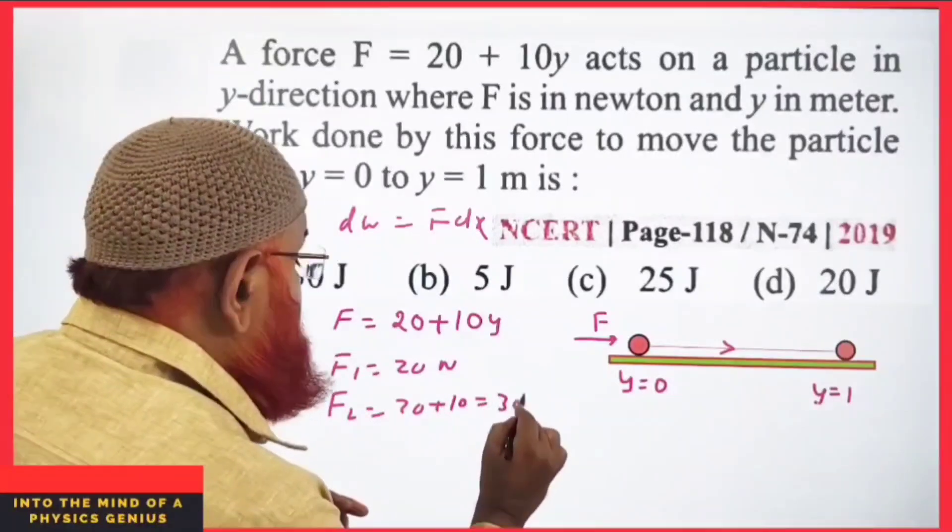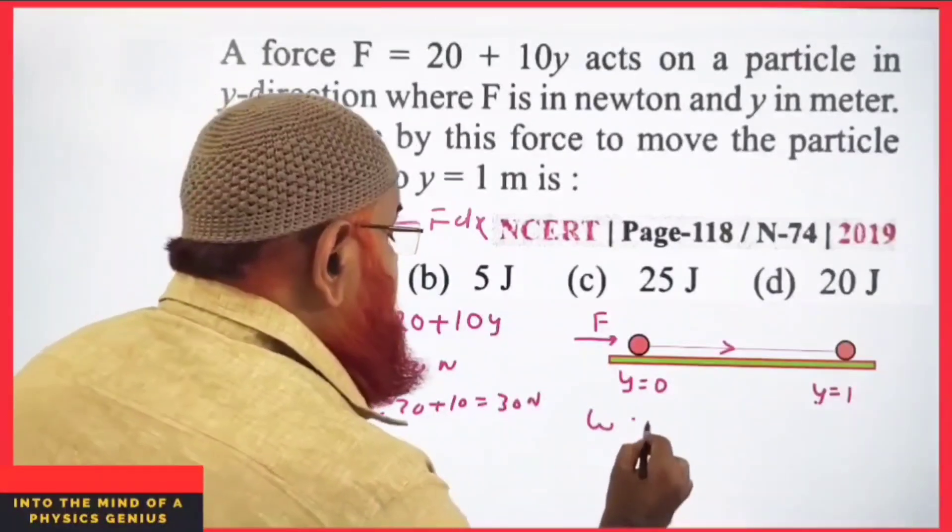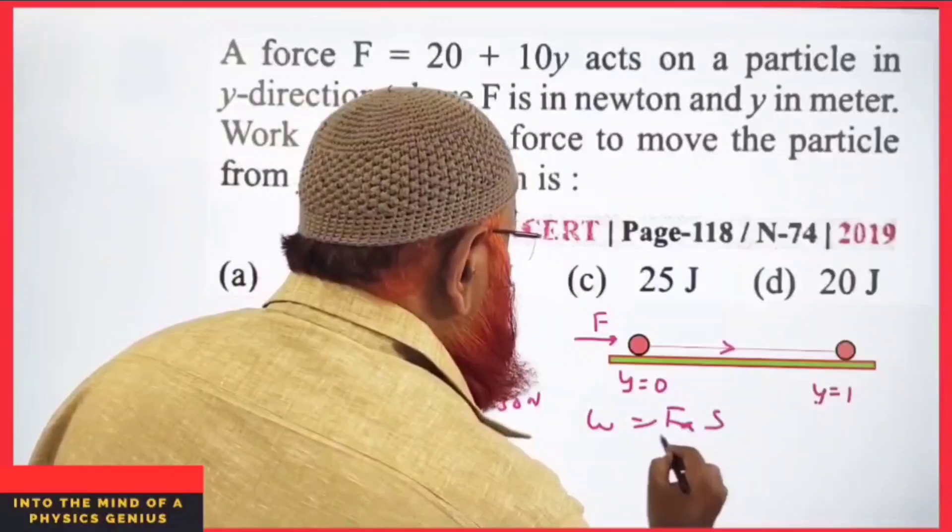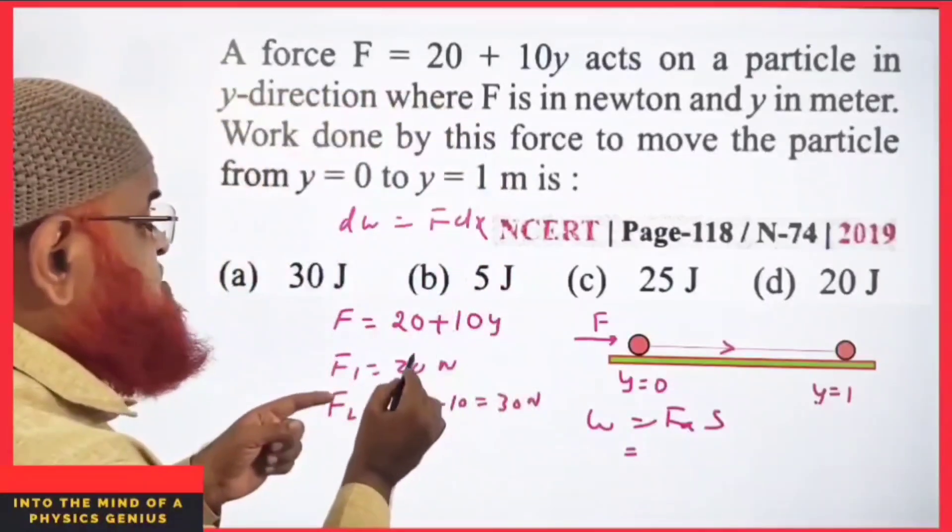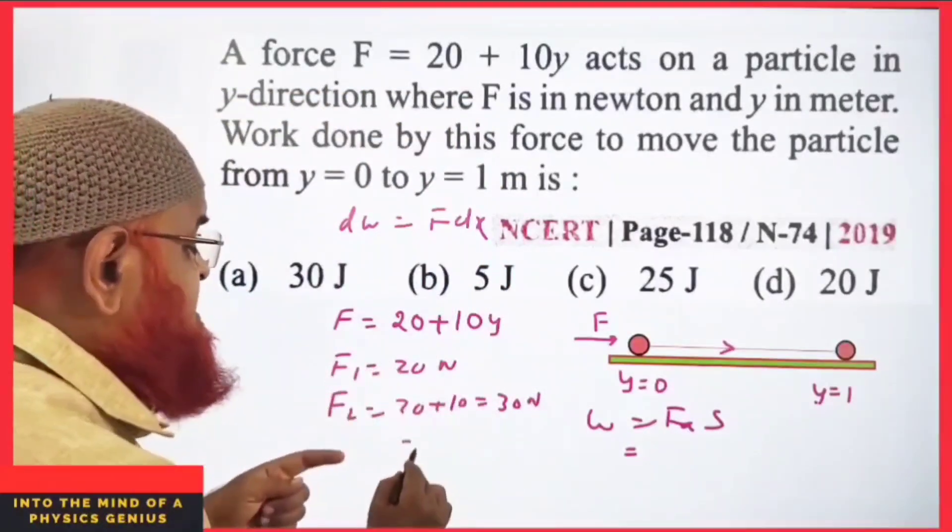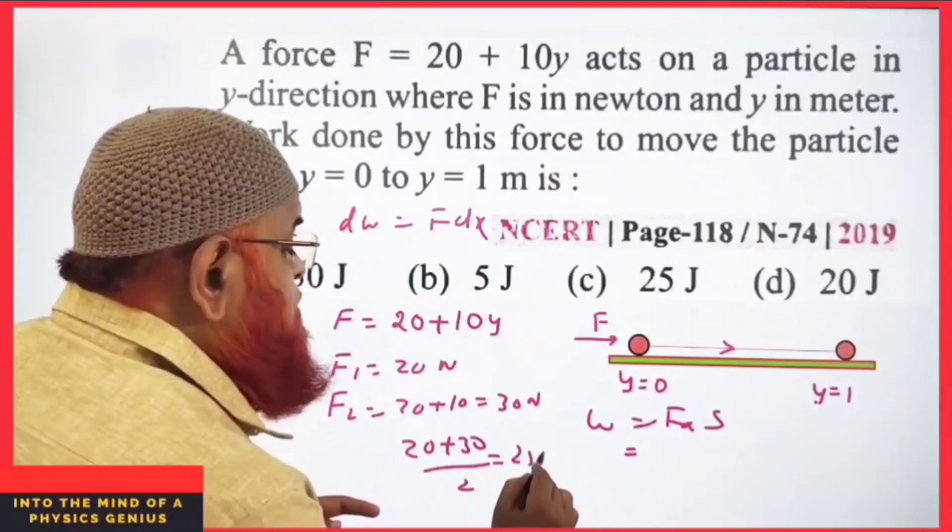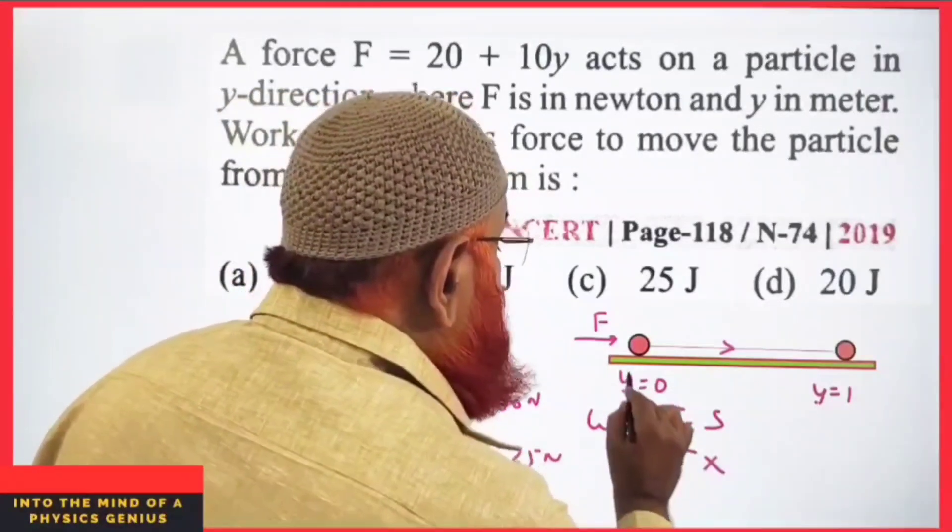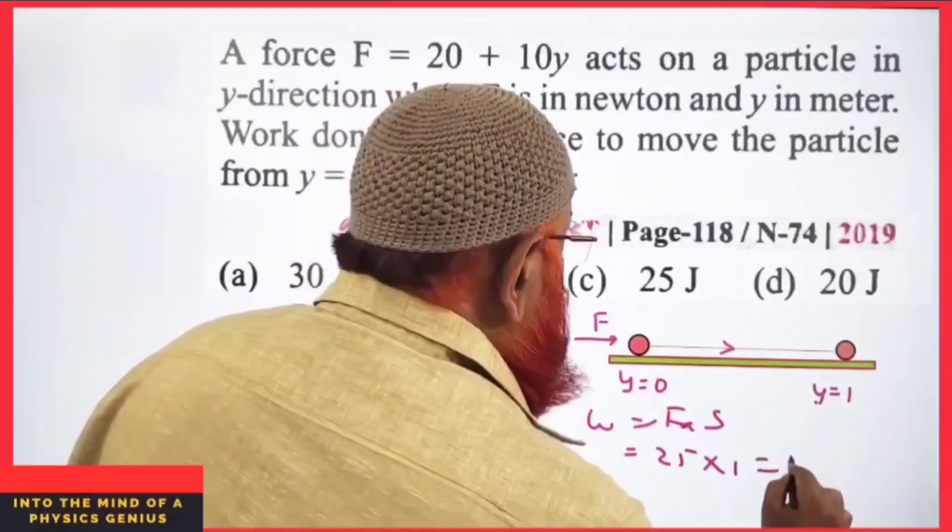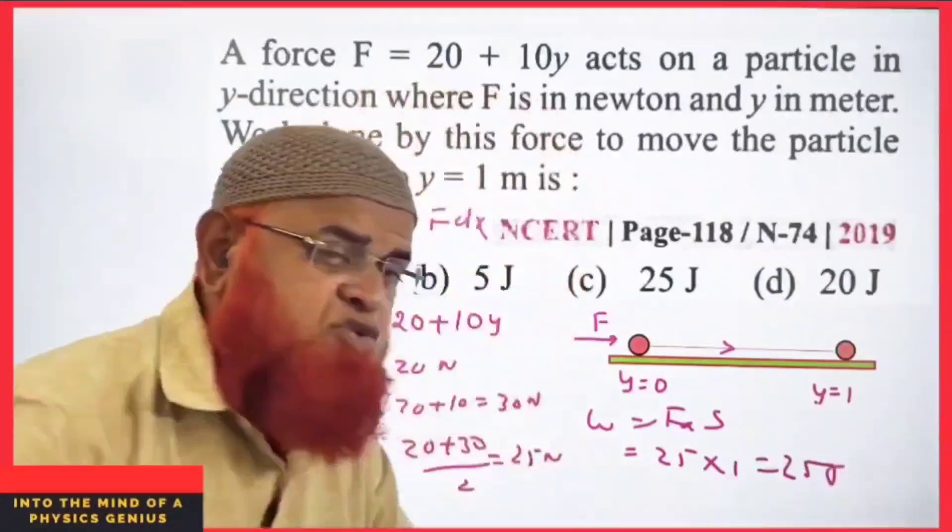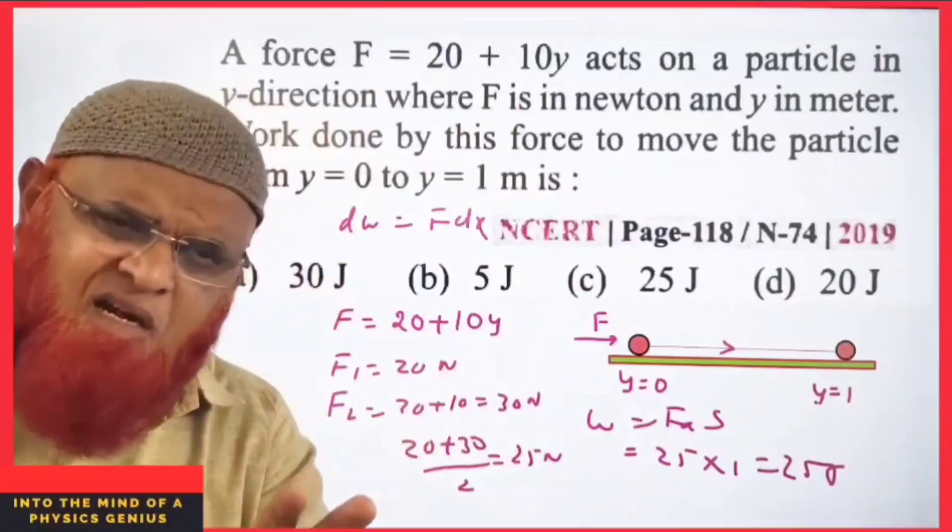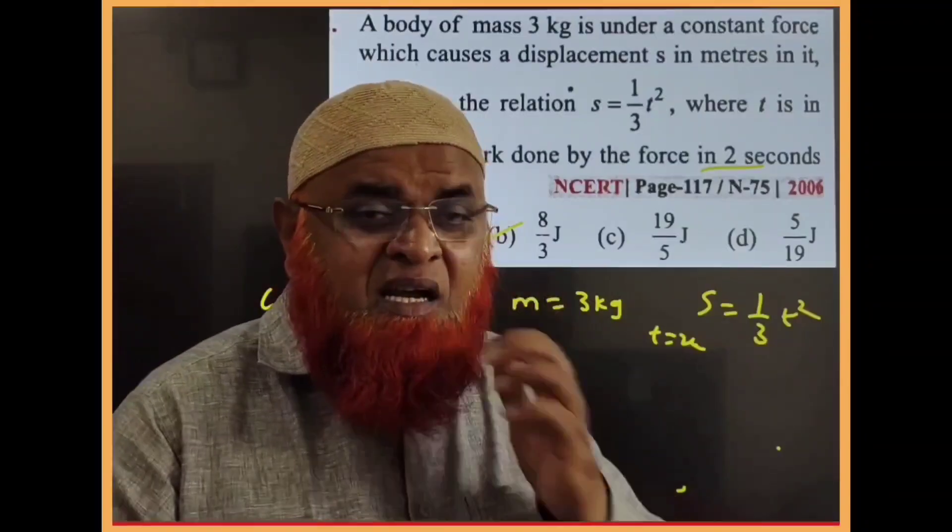Then you can find work done as average force times displacement. Average force means taking the average of 20 and 30, which is (20+30)/2 = 25 newtons. Therefore, 25 times the displacement from 0 to 1, which is 1 meter, gives you 25 joules. So simple, dear students!